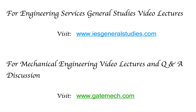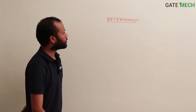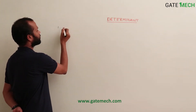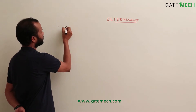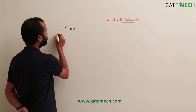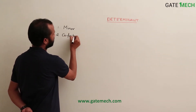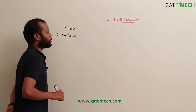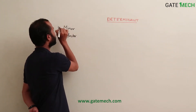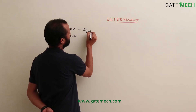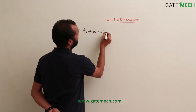Before going to discuss how we find determinants of higher order matrices, we shall see some important definitions. Two things particularly: one is minor and one is cofactor. The minor is usually defined for square matrices only, for elements of square matrices.